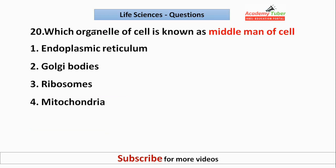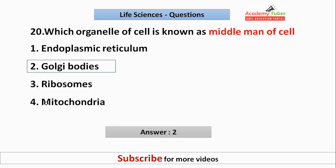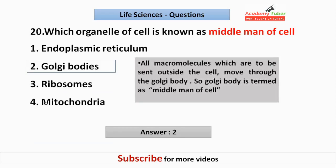Which organelle of the cell is known as the middleman of the cell? The answer is the Golgi bodies. All macromolecules which are to be sent outside the cell move through the Golgi body, so the Golgi body is termed the middleman of the cell.